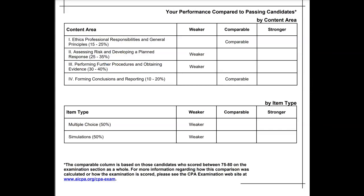If you didn't pass audit, you probably received a score report that looks something like this. You see content area number three: performing further procedures and obtaining evidence. Most candidates who don't pass audit are weaker here in number three. Most everybody does okay with Roman numeral one and number four, which is ethics and reporting.